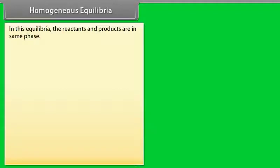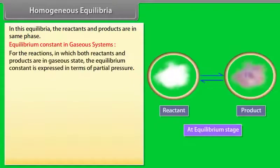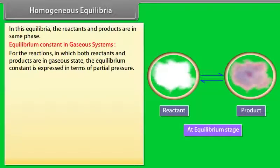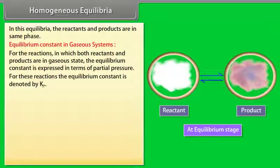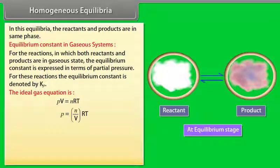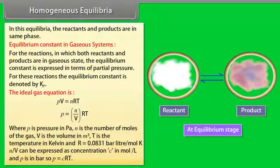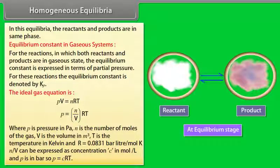Homogeneous Equilibria: In this type of equilibria, the reactants and products are in the same phase. Equilibrium Constant in Gaseous System: For reactions where both reactants and products are in gaseous state, the equilibrium constant is expressed in terms of partial pressure and is denoted by KP. The ideal gas equation gives P = (n/V)RT = CRT, where C is the concentration in mole per liter and P is in bar.